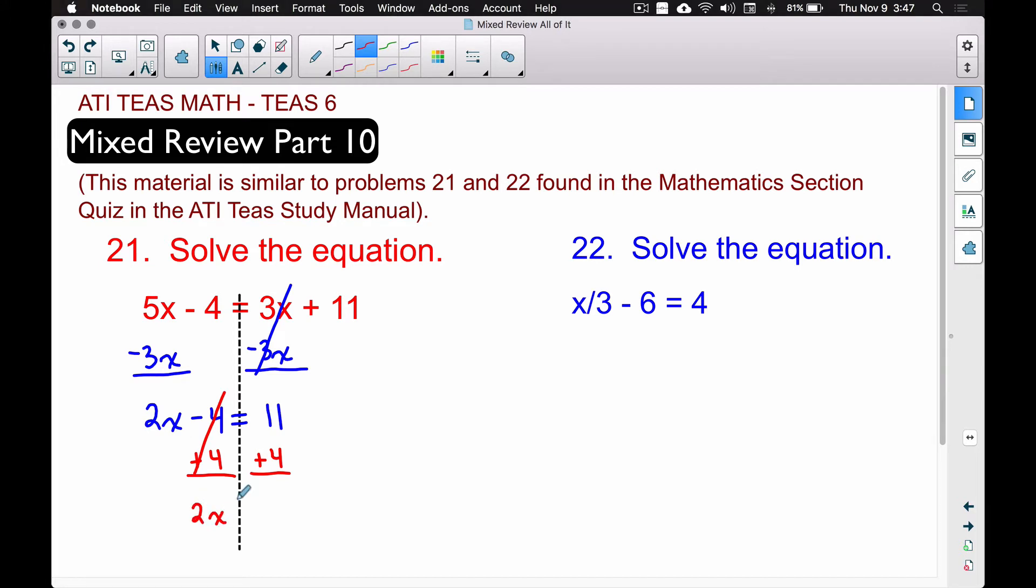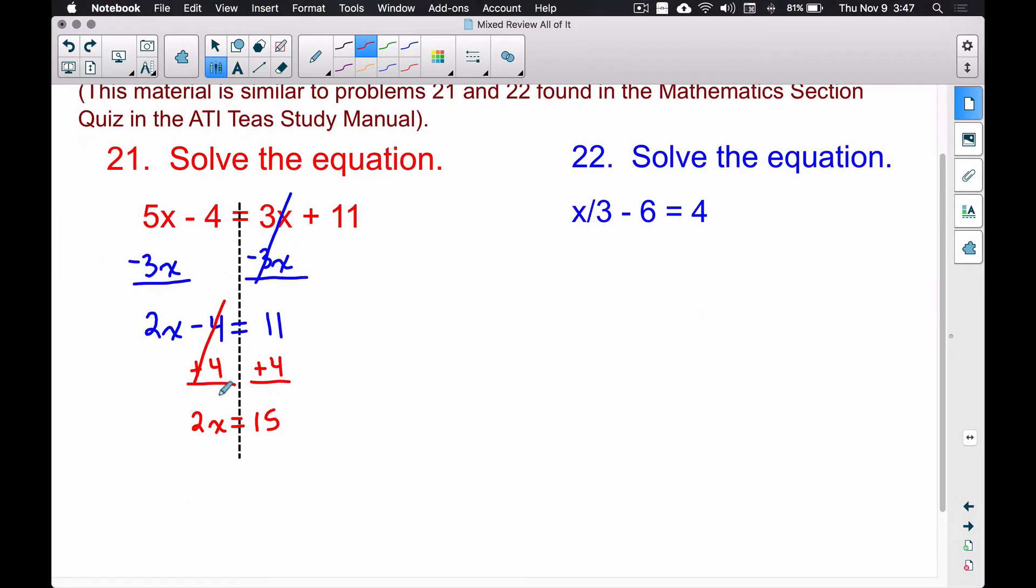So our new equation is 2x = 15. Well, maybe you know it, maybe you don't, but that is 7.5. Two times 7.5 gives you 15, or some of you may say 15 over 2—that's the same thing. We're taking 2 and multiplying it by something; the inverse operation of multiplying is to divide.